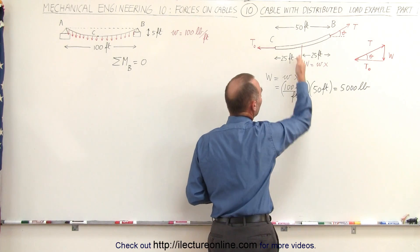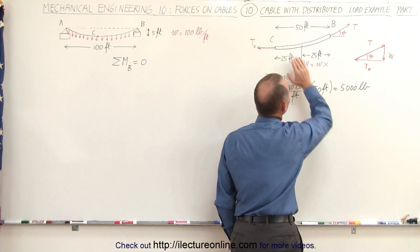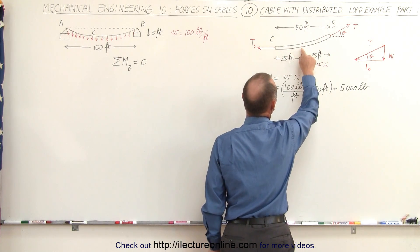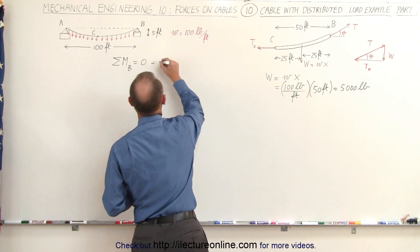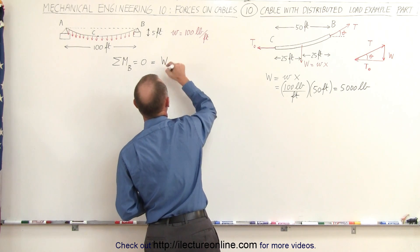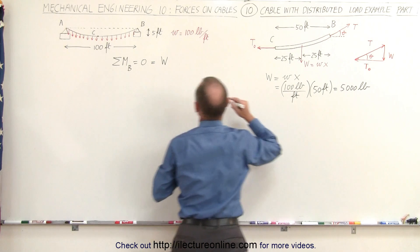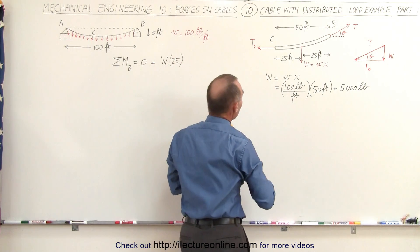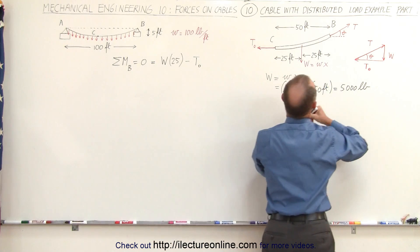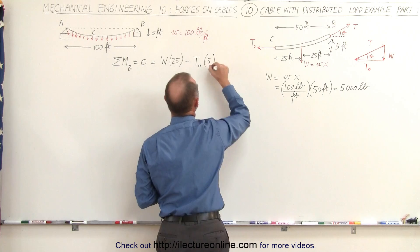The total load acts exactly at the midpoint of the cable — an approximation valid because the sag is very small. This load causes a counterclockwise (positive) moment, so we write: W times 25 feet. Then we subtract T-sub-zero, which causes a clockwise moment, times the sag distance.